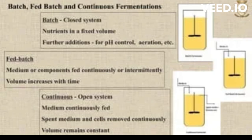In a fed-batch culture, cells are grown in a closed system with a fixed volume of medium. However, unlike a batch culture, the medium is periodically supplemented with additional nutrients to support cell growth.